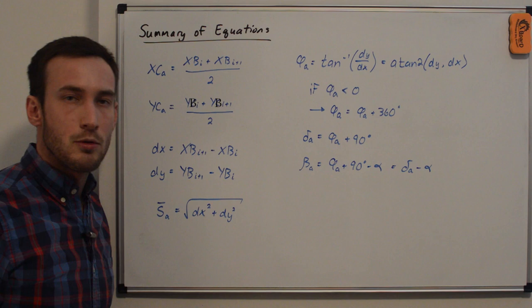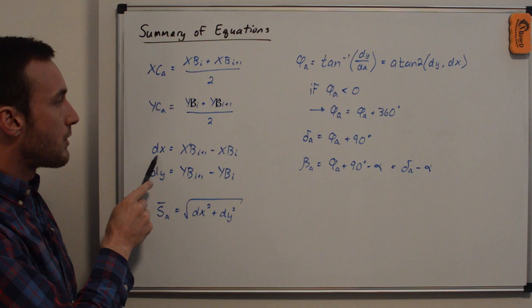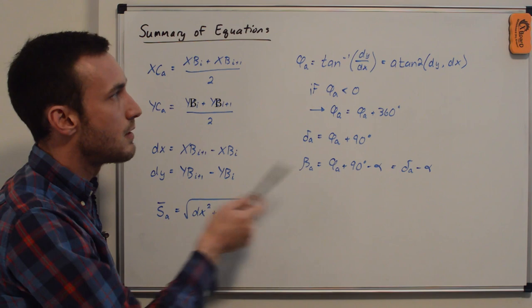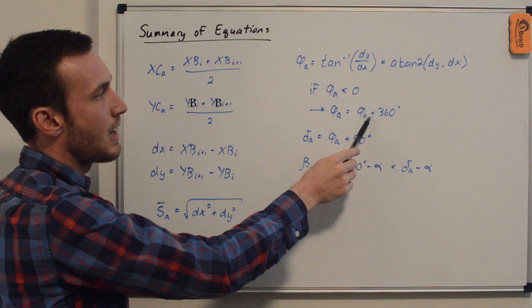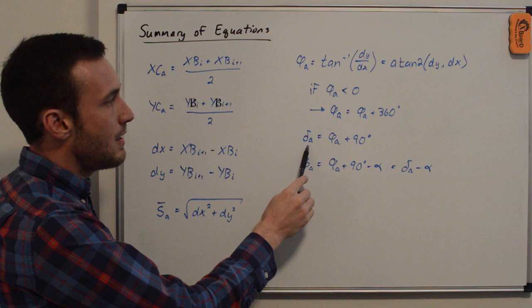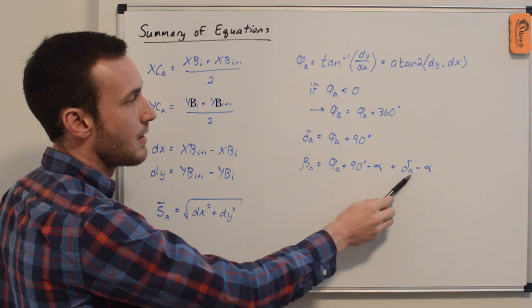Before getting to the code, let's go through the summary of all the equations. We got the control point locations based on the boundary points, the difference in boundary point locations dx and dy, the panel length s̄A as the square root of dx² + dy². Phi_a is the angle between the positive x-axis and the inner side of the panel, coded as atan2(dy, dx); if that value is less than 0, add 360 — this helps with plotting and visualization. Delta_a is phi_a + 90, and beta_a is delta_a minus the angle of attack.